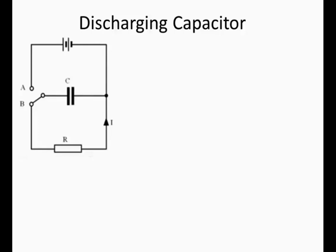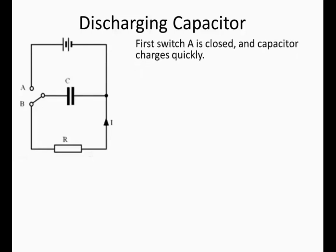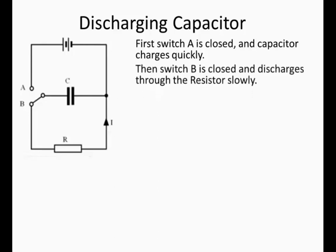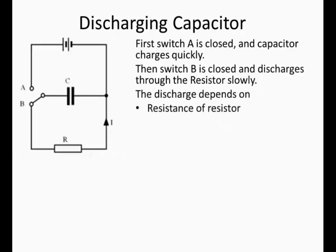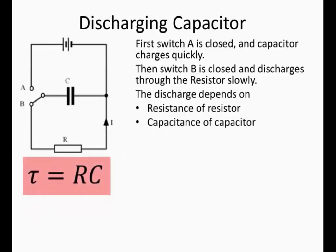Now let's look at discharging a capacitor. First we switch to A and the capacitor charges very quickly because there is no resistor. Then we switch to B and the charge discharges through the resistor quite slowly because there is resistance there. This discharge rate depends on the resistance of the resistor and the capacitance of the capacitor. Tau is equal to RC — the product of resistance times capacitance. This is called the time constant.